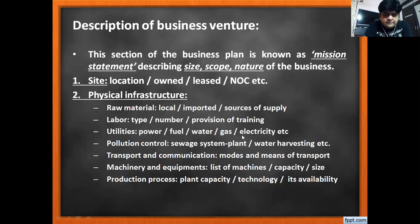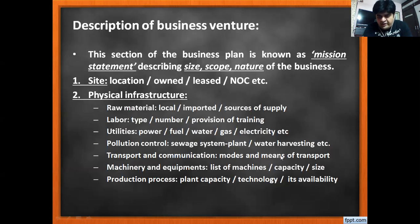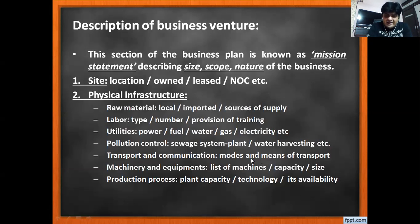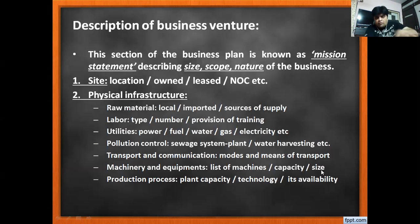Pollution control covers your sewage system, water harvesting, and whether you are affecting local water bodies. Transport and communication covers modes and means of transport — whether it will be your own transport or a hired transport agency. For machinery and equipment, you list what machines are required, their capacities, production output, size, and what proportion of your entire plant they will occupy.